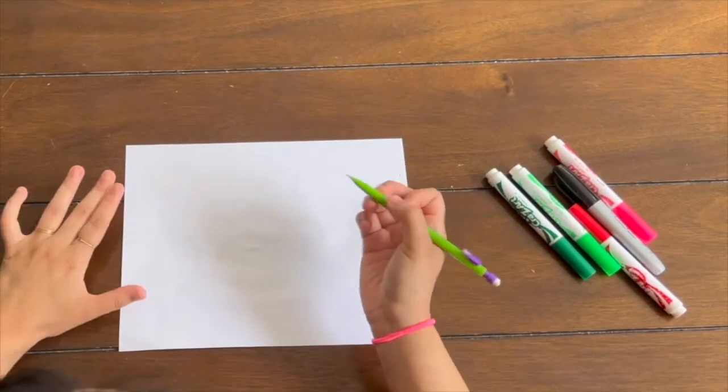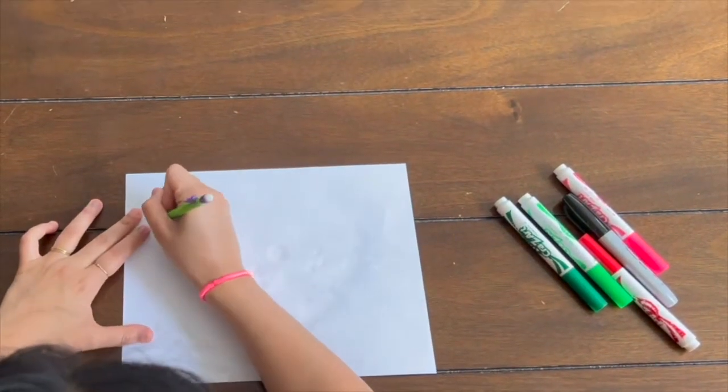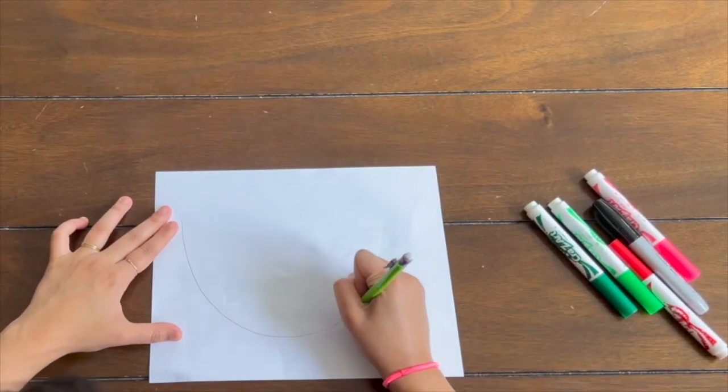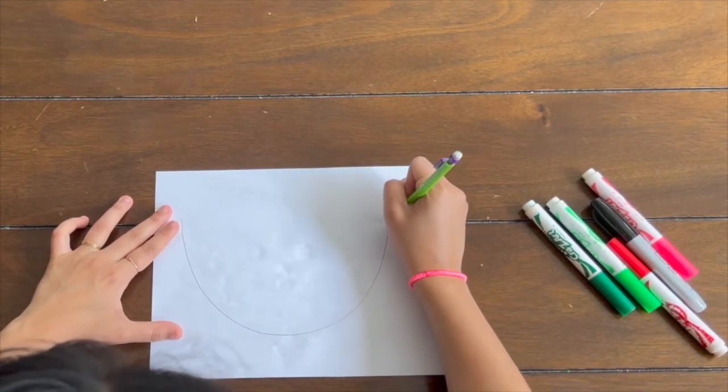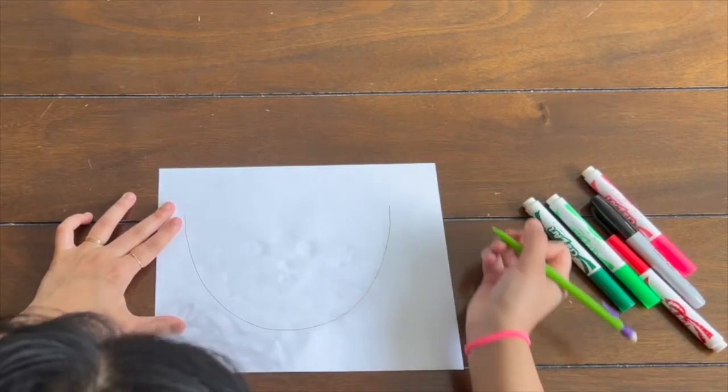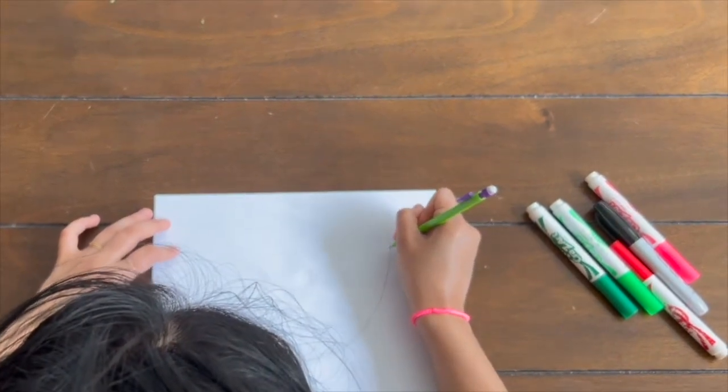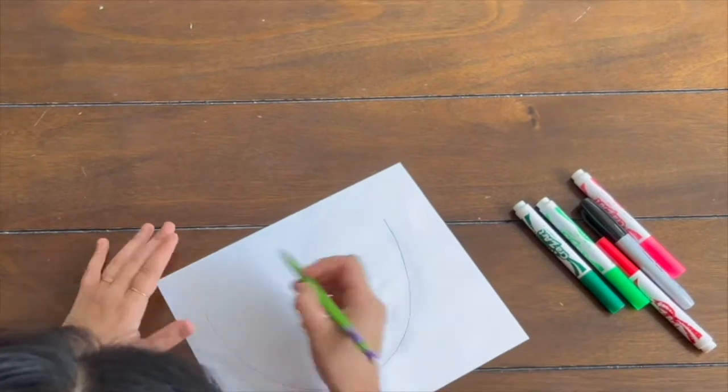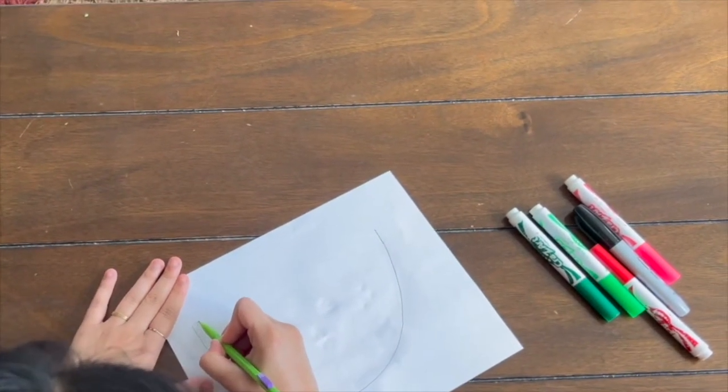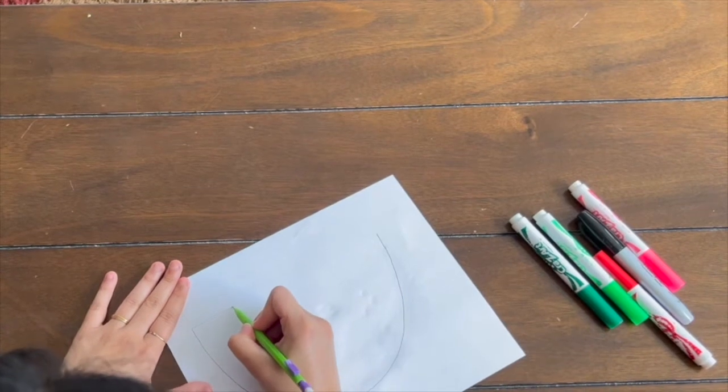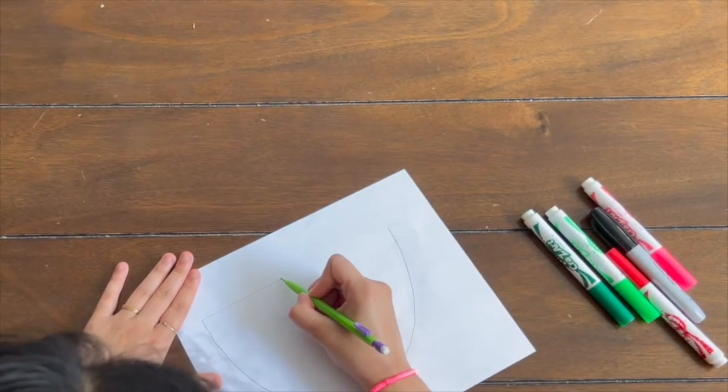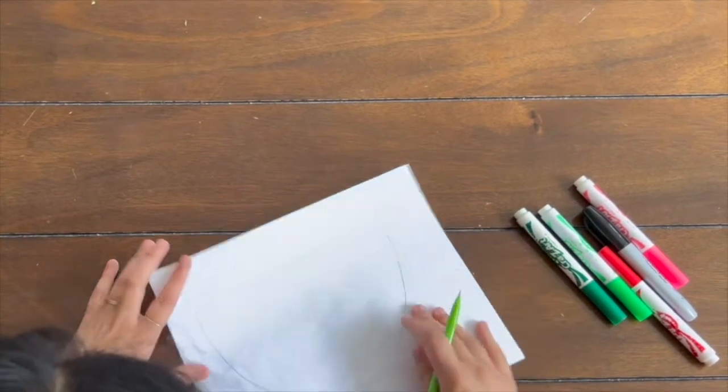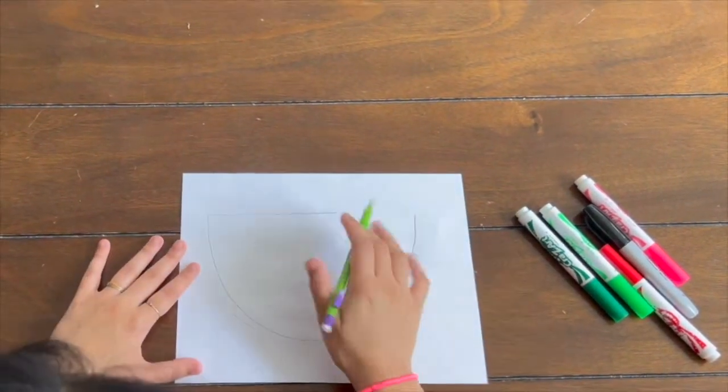I'm going to draw a half circle from one end of the sheet to another. Watch out if your table has any bruises or not. And then I'm going to connect this half circle almost all the way until the other end, like this. Make sure your lines are even. So you should get something like this.